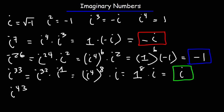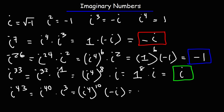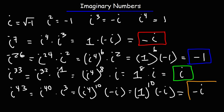Now for the last one, i to the 43rd power — we can break it up as i to the 40 times i cubed. i to the 40, I'm going to write as i to the fourth raised to the 10th power. And i to the third is negative i. So we can replace i to the fourth with 1, and the final answer is just negative i. That's how you simplify imaginary numbers with very large exponents.